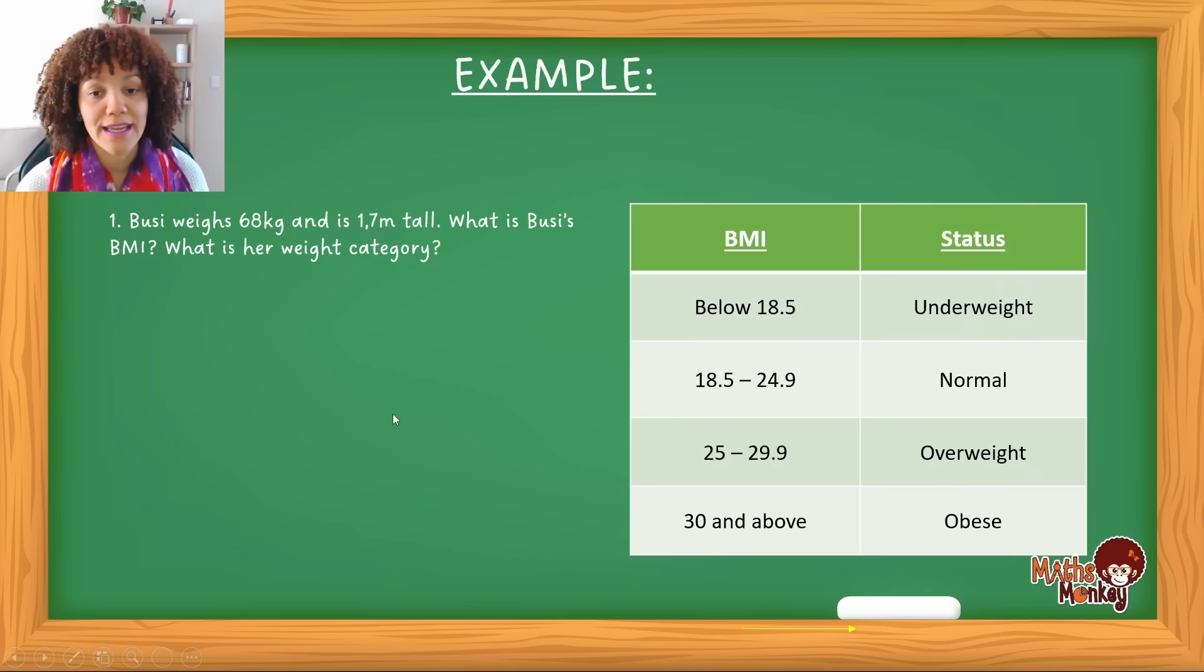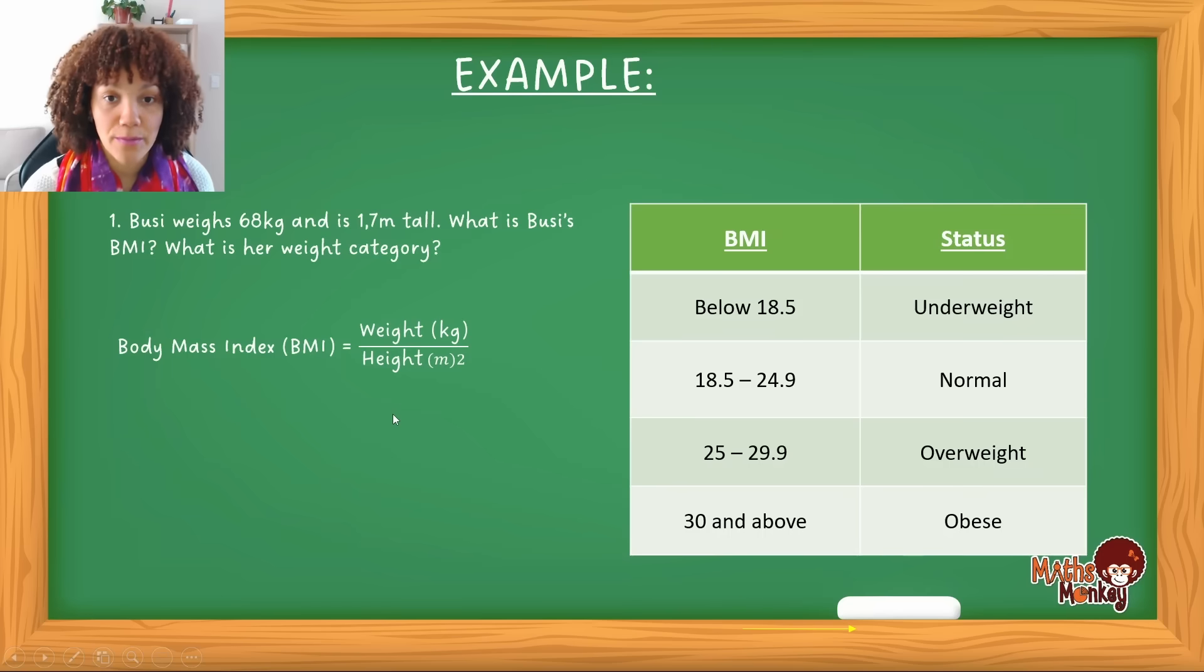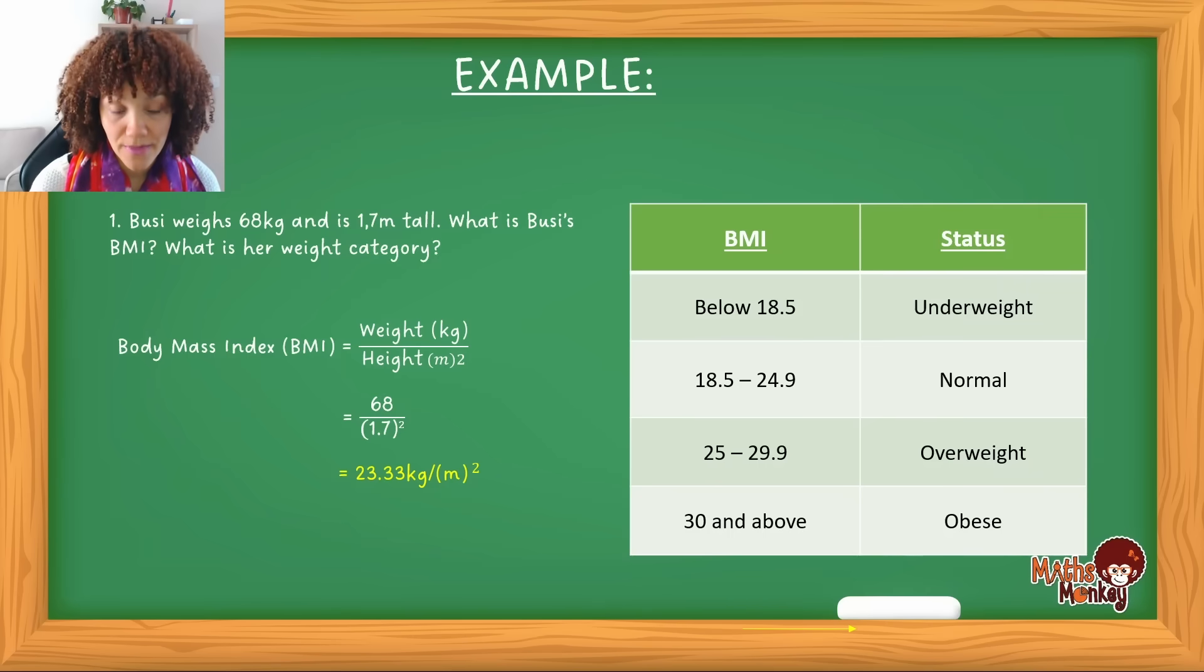So again, the formula, which you don't have to memorize, is given to you in the exam. So this is the BMI. So what they're asking you to do is calculate her BMI. They give you her weight and they give you the height. So this is just a simple plug-into-the-formula type of question. So her weight is 68 over 1.7 squared, and then the base you must square. And then the answer here is 23.33 kilograms per meters squared. That's the unit for BMI.